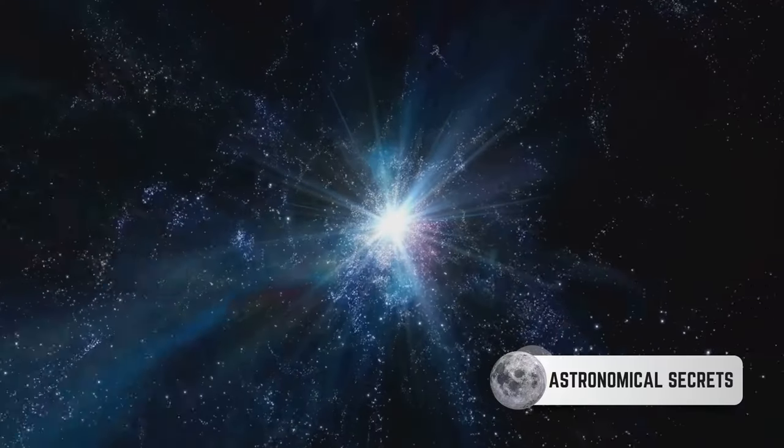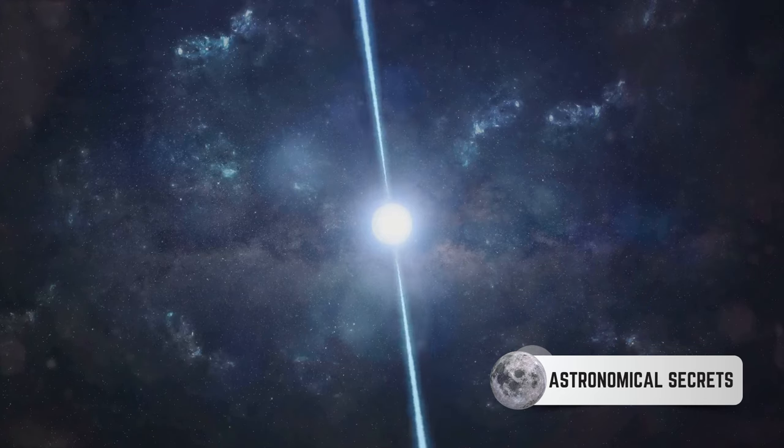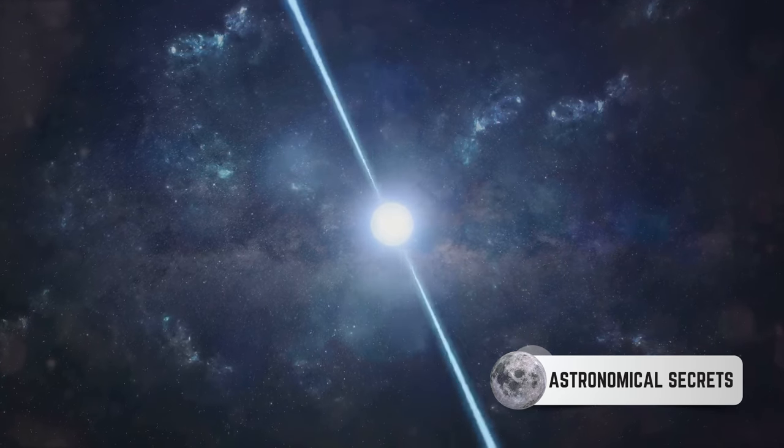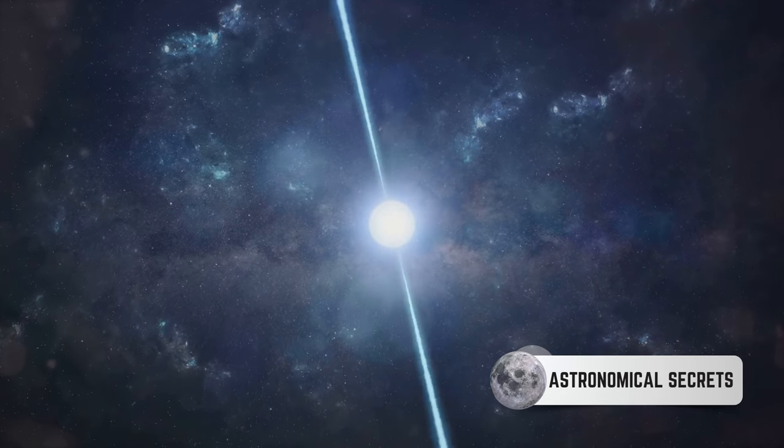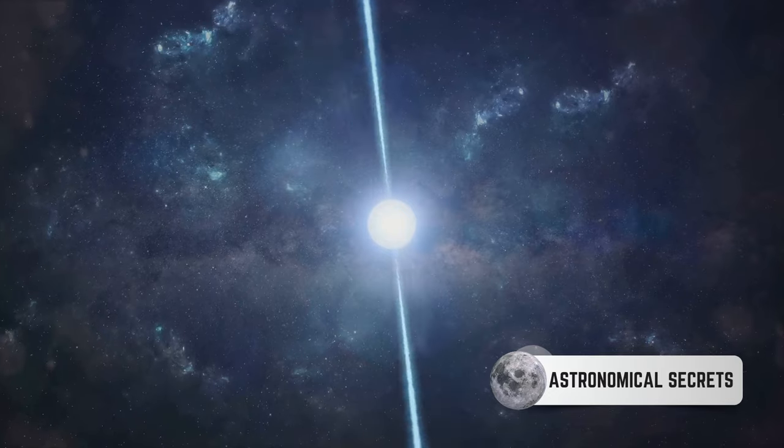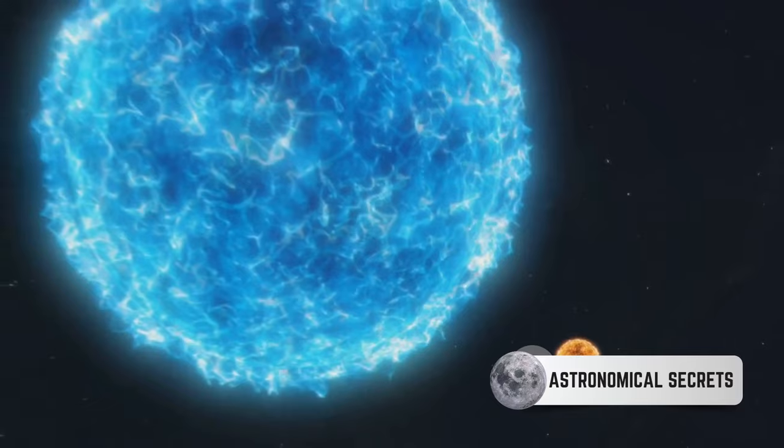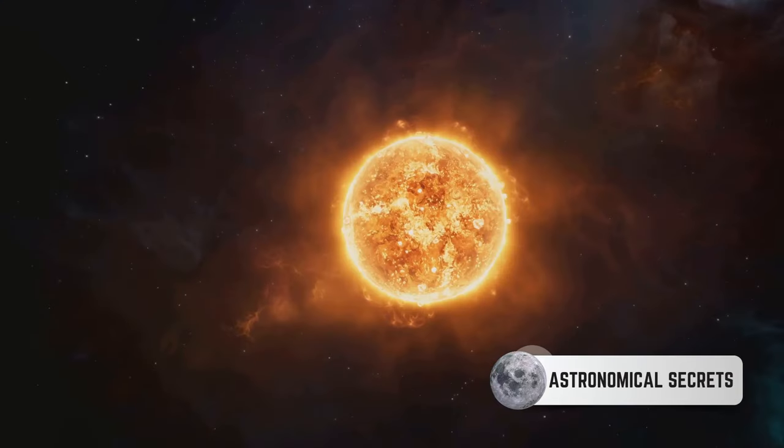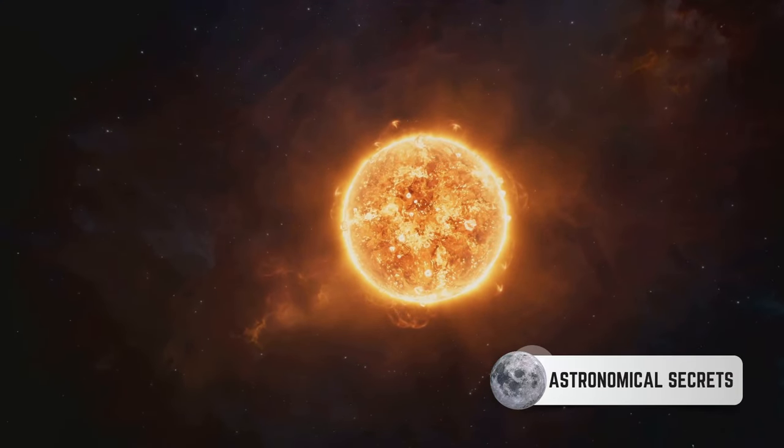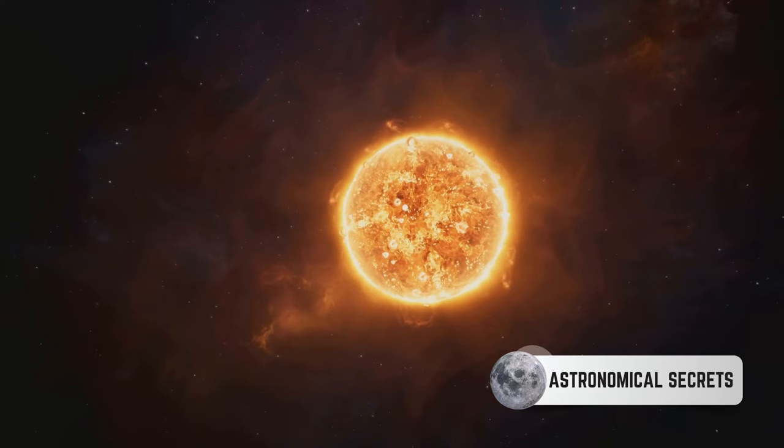The aftermath of a supernova is just as fascinating. If the core that survives the explosion is between one and three times the mass of the sun, it forms a neutron star. These incredibly dense objects, no more than 12 miles across, pack a mass up to three times that of the sun. Imagine a sugar cube with the mass of a mountain, and you're getting close.